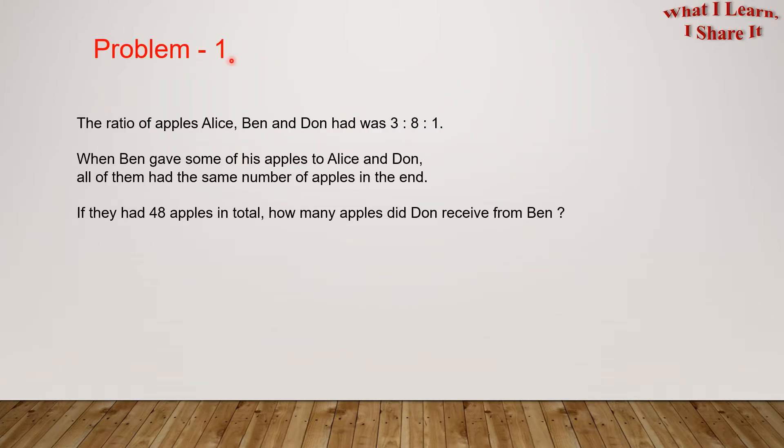Problem 1. The ratio of apples Alice, Ben and Don had was 3 is to 8 is to 1. When Ben gave some of his apples to Alice and Don, all of them had the same number of apples in the end. If they had 48 apples in total, how many apples did Don receive from Ben?